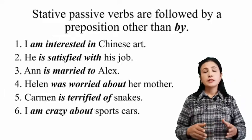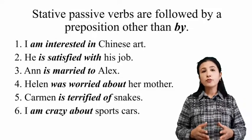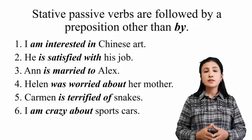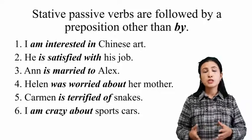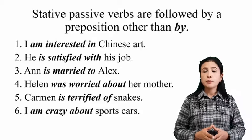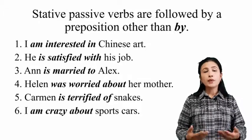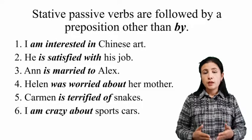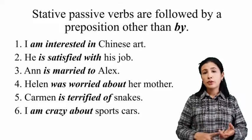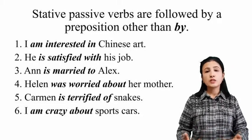If we continue to explain this topic: stative-passive verbs are usually followed by a preposition other than 'by.' If you remember passive sentences, sometimes we use the preposition 'by.' But stative-passive verbs usually use a different preposition. For example: 'I'm interested in Chinese art,' 'He's satisfied with his job,' or 'She is married to Alex.' Here, 'interested,' 'satisfied,' and 'married' are stative verbs — they show a person's condition.